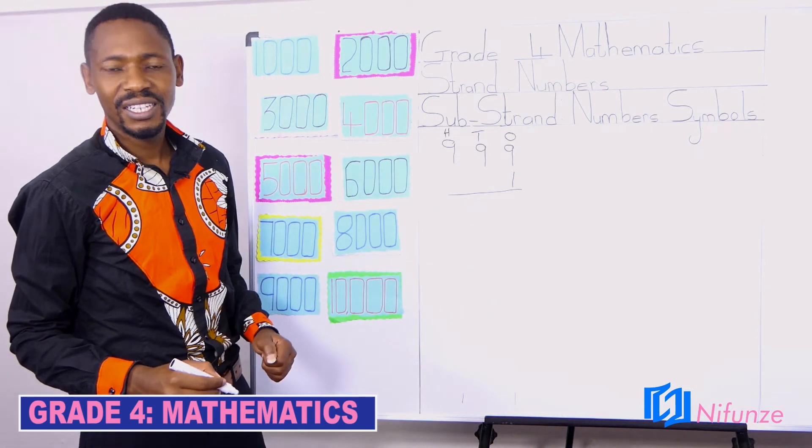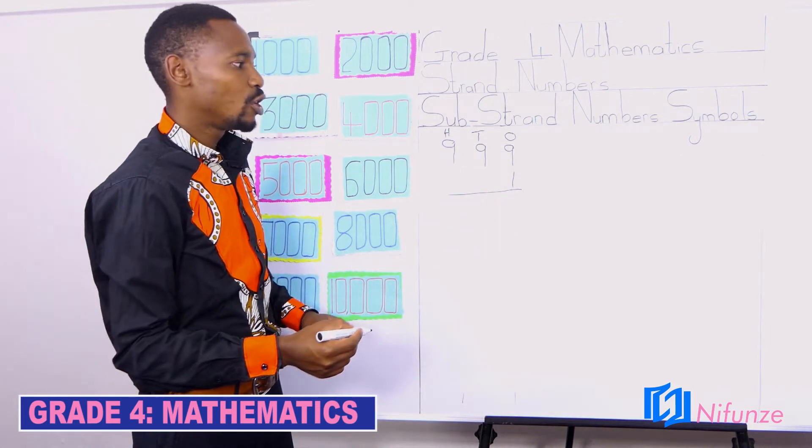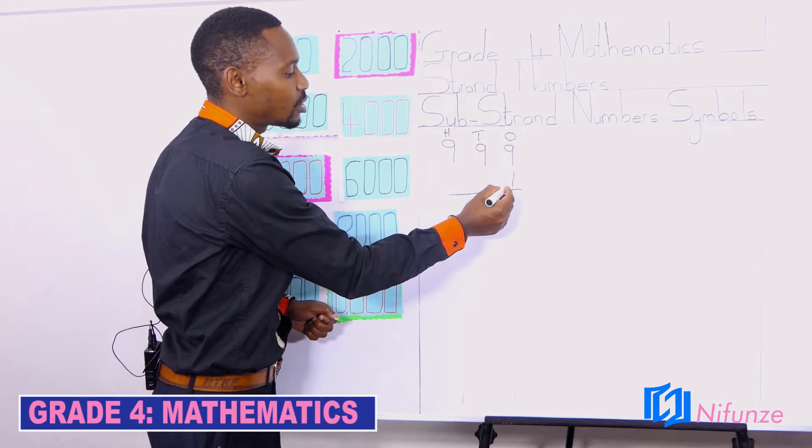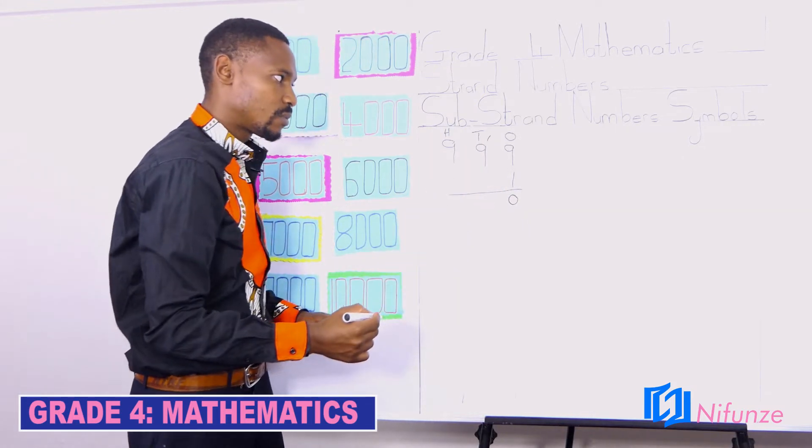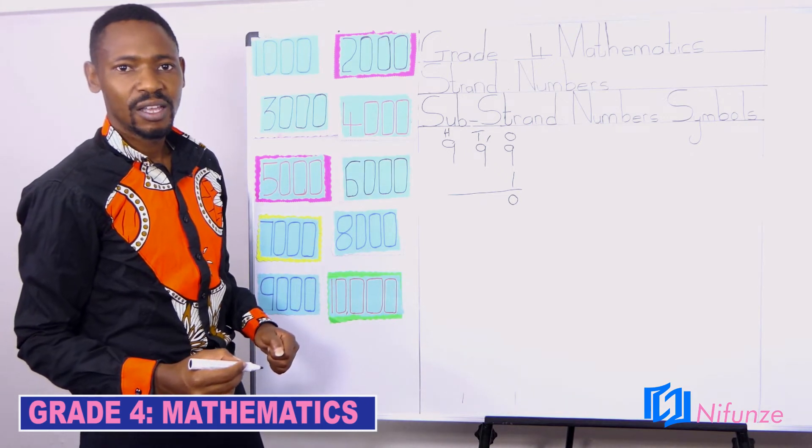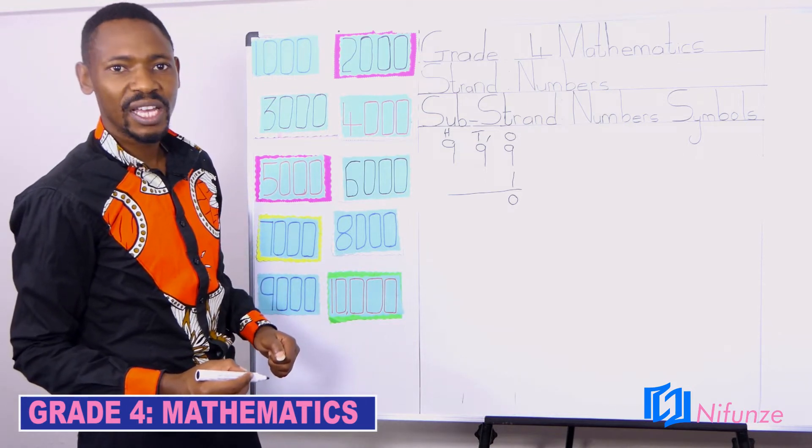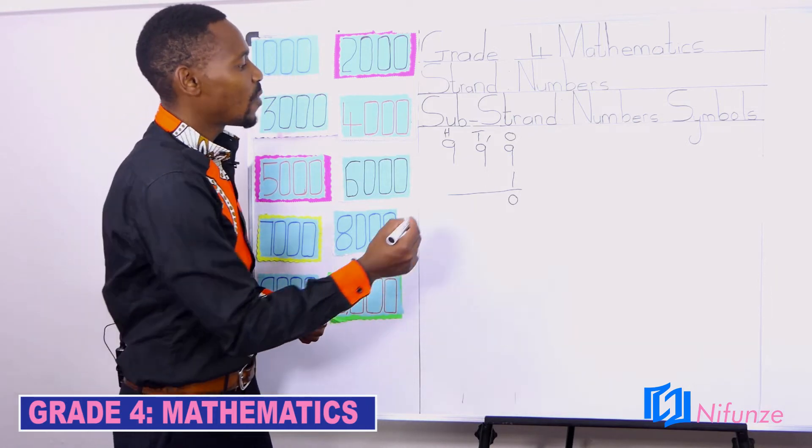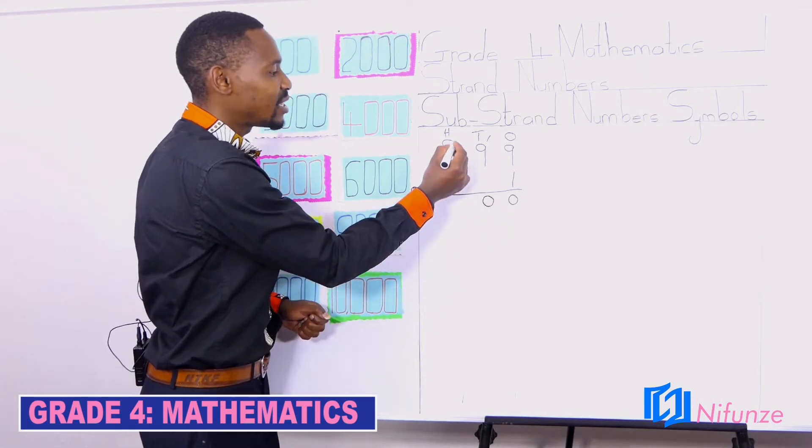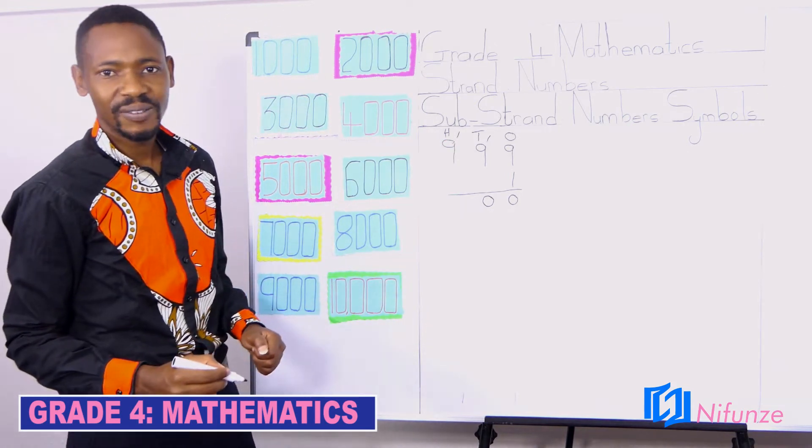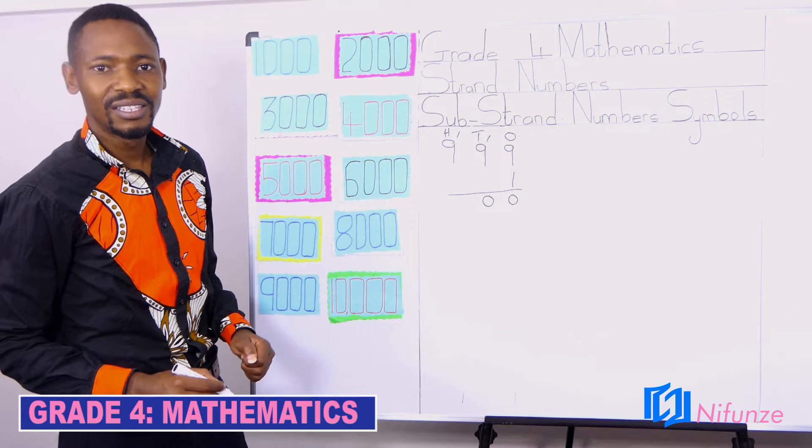Now, let us add 9 plus 1. We get 10. So here there is, in those 10s, we put 0, then we carry 1 to the 10. And put it to the 9 tens. We are going to get 1 ten plus 9 tens. We are going to get 10. So that 10, we are going to carry another 1, which represents 100, and put it in 9. So we shall say 9 plus 1 is 10.